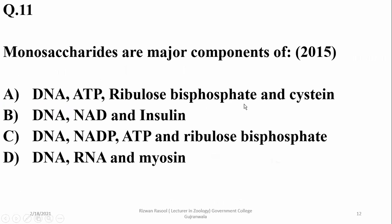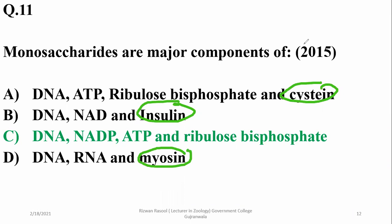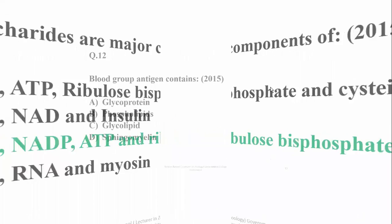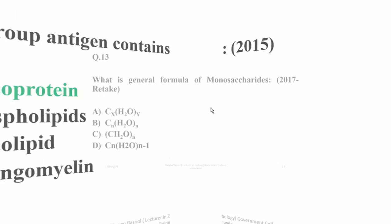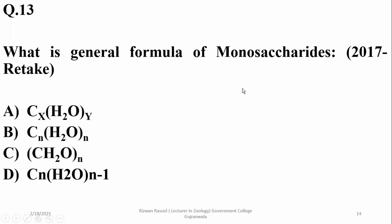Monosaccharides are major components of DNA, RNA, as well as NADP nucleotide, ATP, and ribulose — which is also a keto sugar. Insulin protein, cysteine amino acid, and myosin are proteins, so due to those options we go for charlie. Blood group antigens contain glycoprotein — they are basically glycoprotein in nature. The general formula of monosaccharides is CxH2OY, so for monosaccharides we choose alpha, where x and y are usually equal.